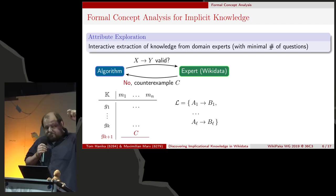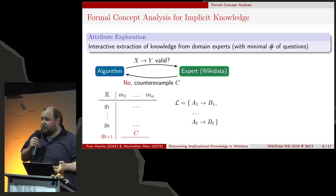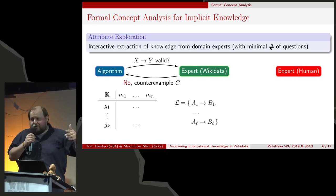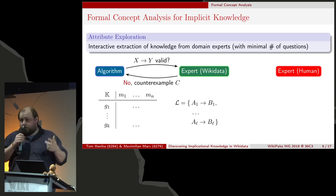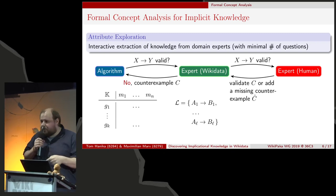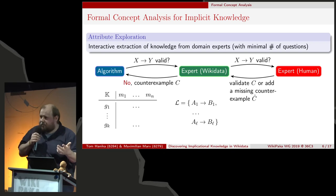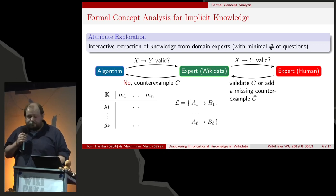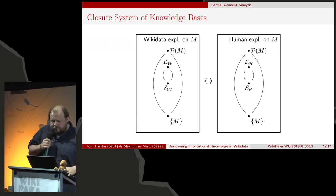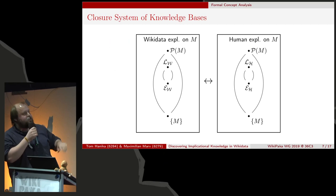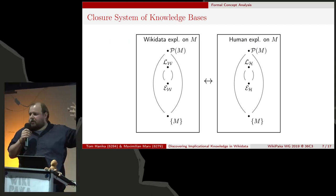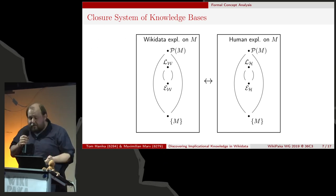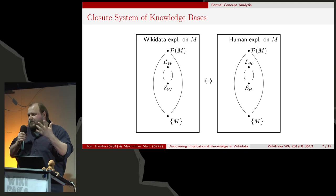Our idea was to use Wikidata as an expert but also include a human in the loop. We first ask the Wikidata expert about a rule, then also inquire the human expert, who can say 'yes, that's true' or 'Wikidata is not aware of this counterexample, I know one' or 'Wikidata says this is true but I'm aware of a counterexample.' You can represent this as two exploration processes: one with just Wikidata and the algorithm, and another combining a human expert and Wikidata, which we have combined into one small tool under development.